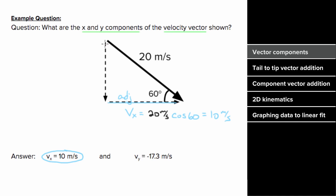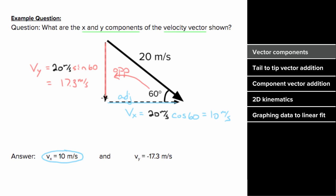And since the vertical component is opposite to this angle, we write the magnitude of the vertical component as 20 meters per second times sine of the angle, which gives us 17.3 meters per second. But since this vertical component is directed downward, technically this vertical component would be negative 17.3 meters per second.